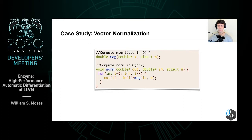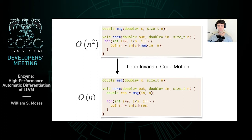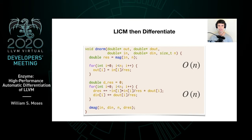Consider the following program norm, which normalizes a vector by calling the mag function n times inside of a loop. We can perform a common compiler optimization known as loop invariant code motion, moving the call to mag outside of the loop, resulting in a total runtime of O(n) rather than O(n²). If we first run this optimization and then differentiate the function, we get an original source code that is O(n) for the forward pass, followed by a reverse pass that also runs in O(n) time.